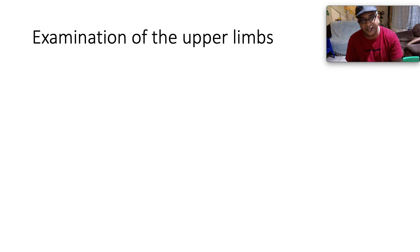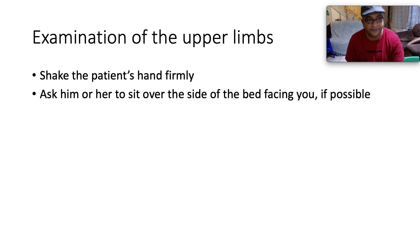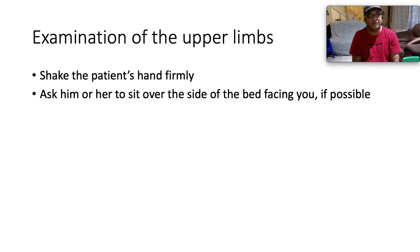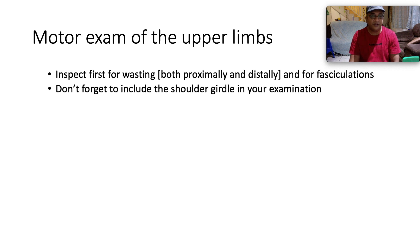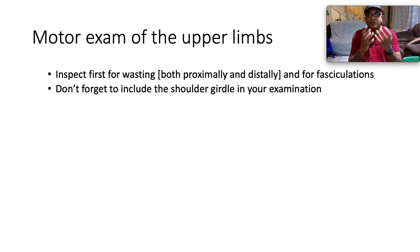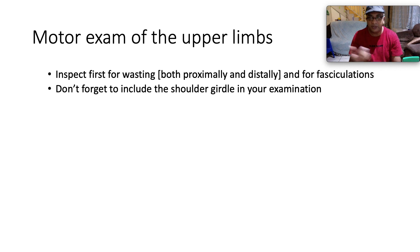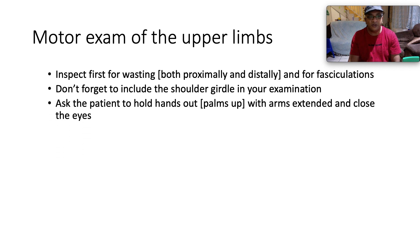We've already covered neurological history taking in a previous video, so we're purely talking about how to approach examination of the upper limbs. First, shake the patient's hand firmly and ask them to sit over the side of the bed facing you. Step back, go to the head end of the bed, and observe — inspect first for wasting, noting whether it's symmetrical, proximal versus distal. Check for fasciculations and include the shoulder girdle in your examination.